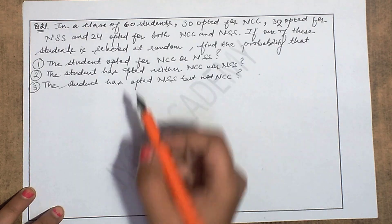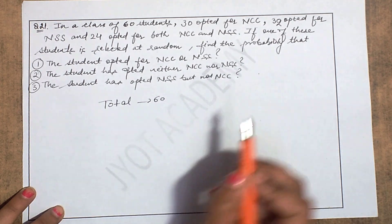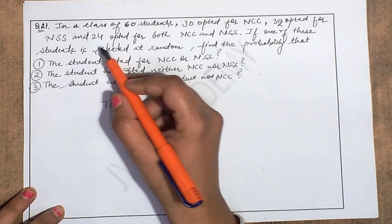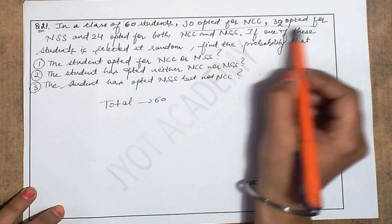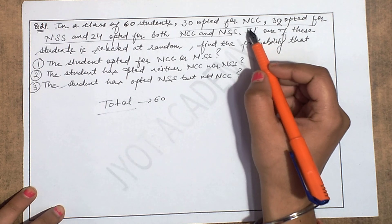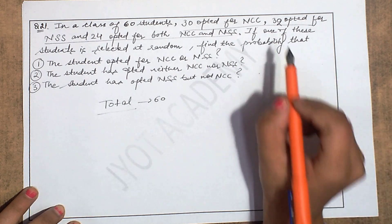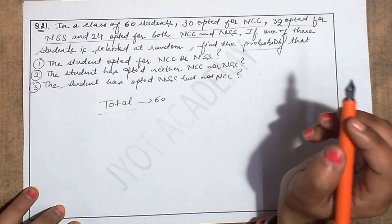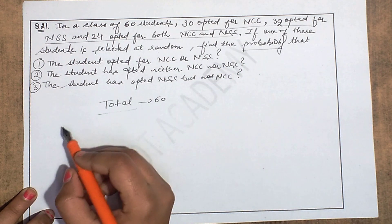Now question number 21: In a class of 60 students, 30 opted for NCC, 32 opted for NSS, and 24 opted for both NCC and NSS. No probability is directly given here — only totals. So the first step is to find the probabilities of each, so we can apply the formula.